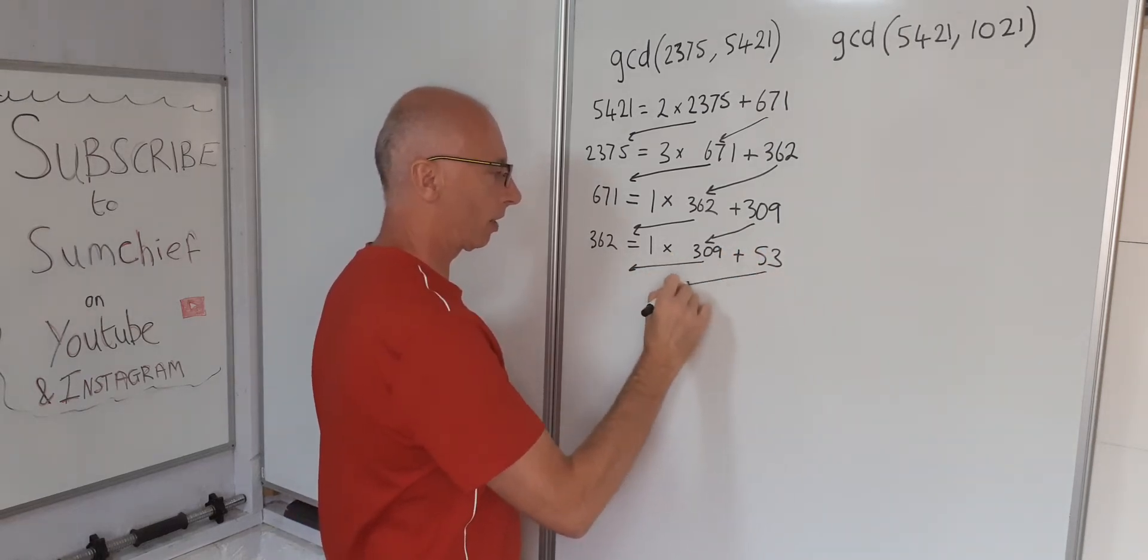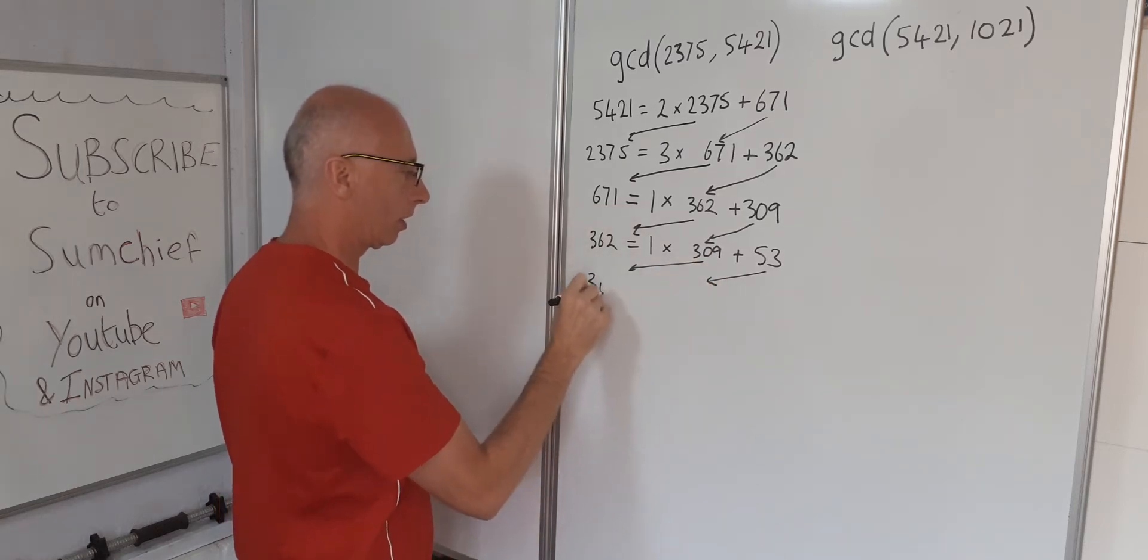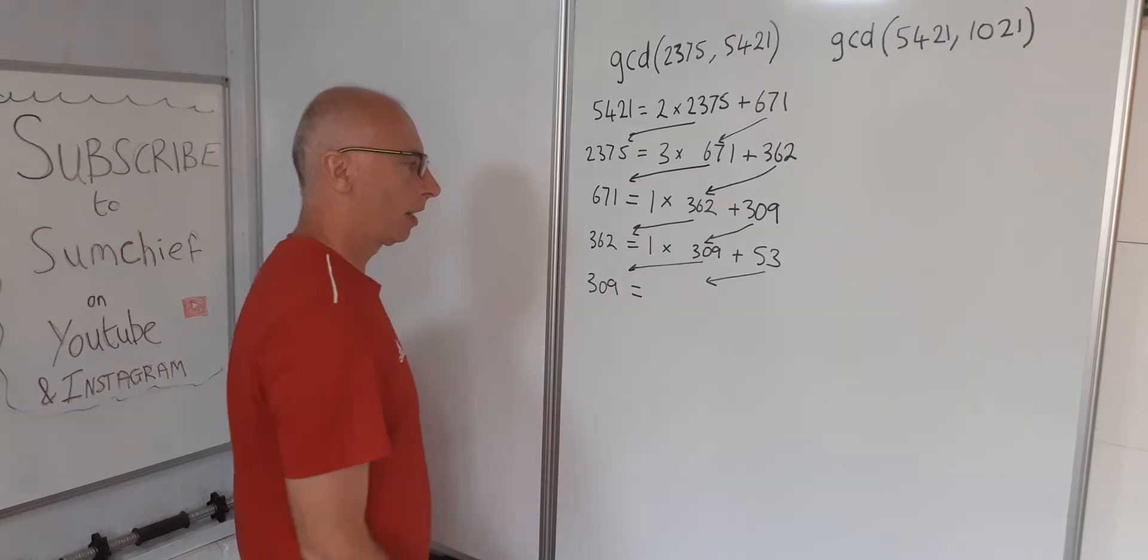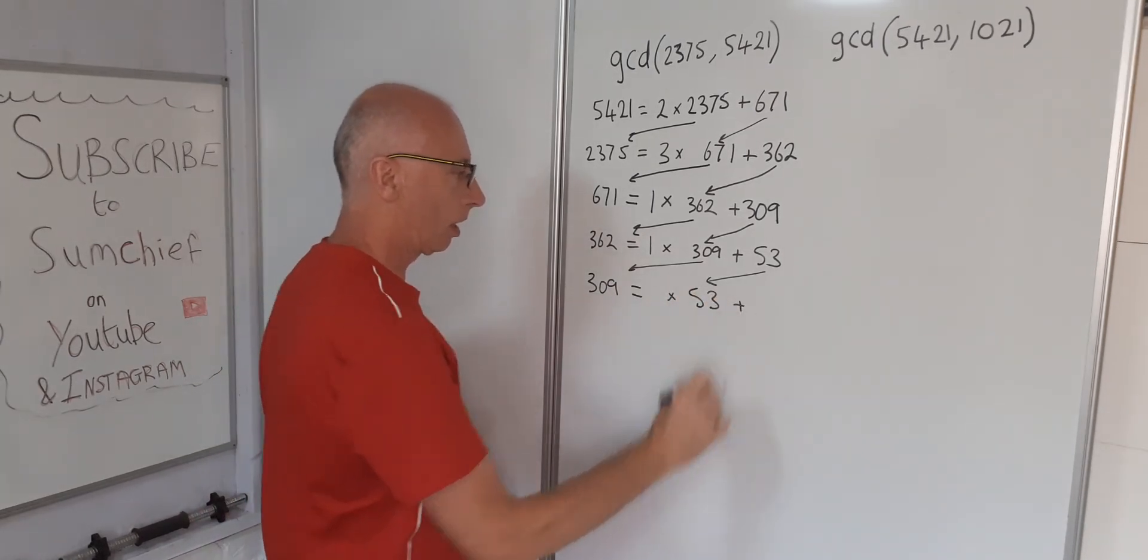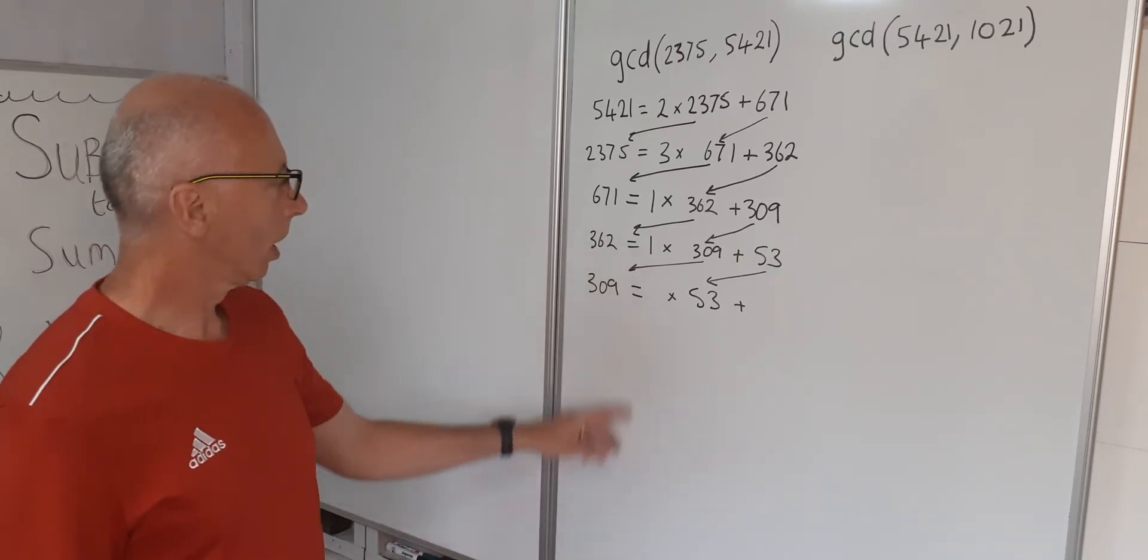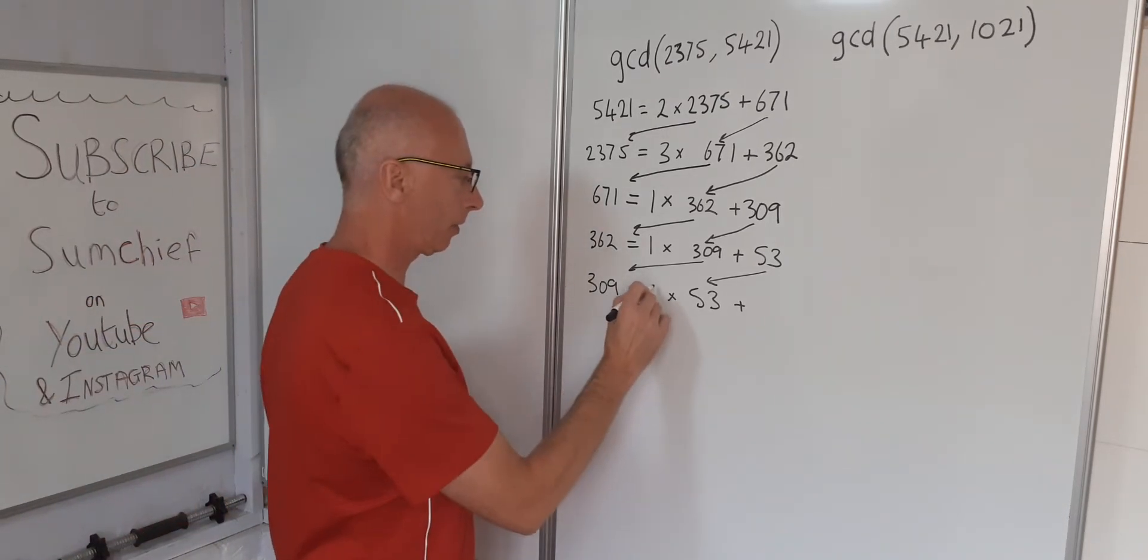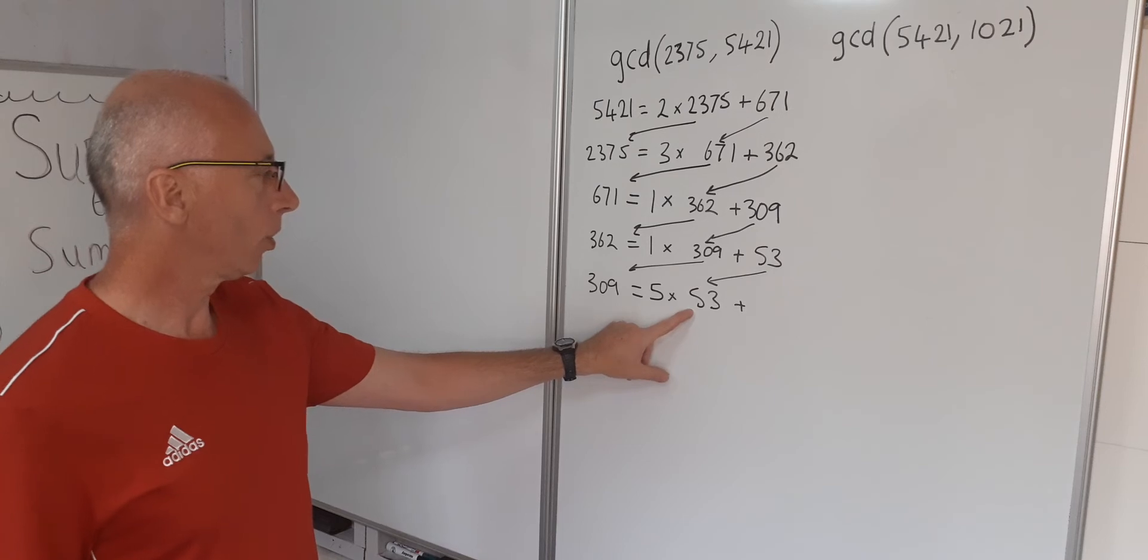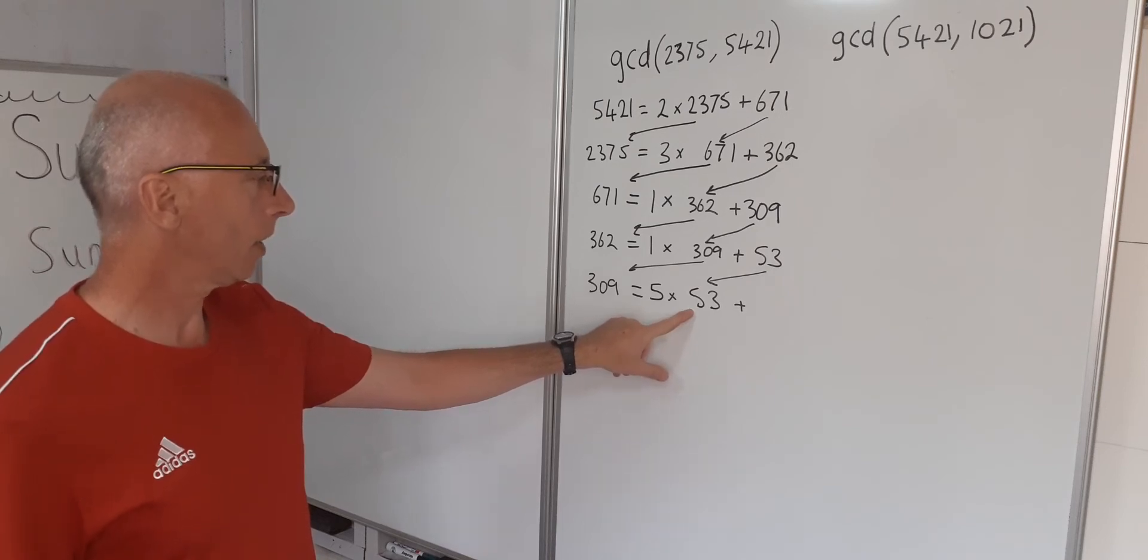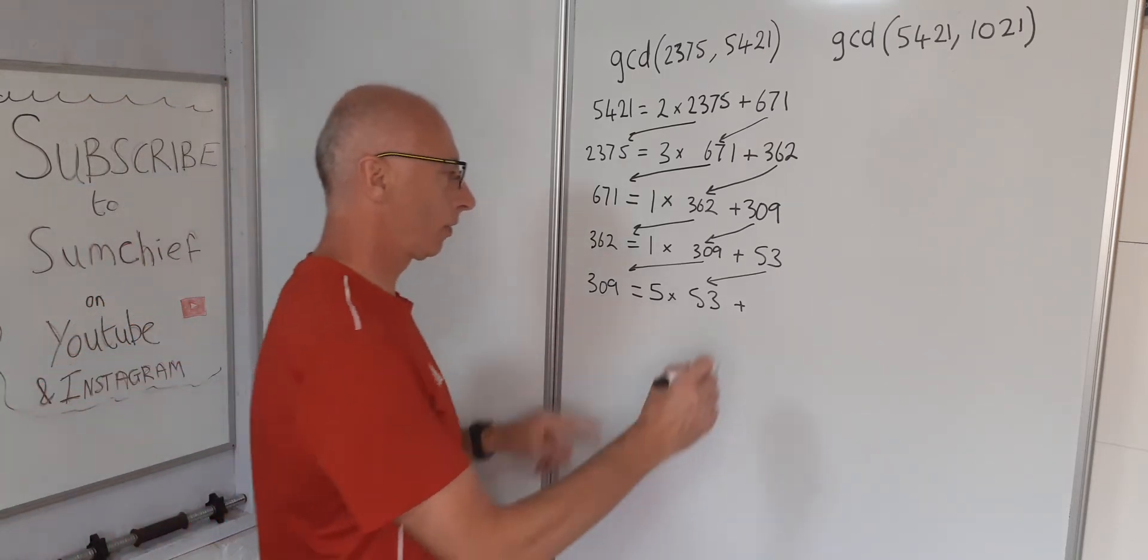Straight into the algorithm. So 309 is the subject again and something times the 53 with a remainder. 53 times 6 would be too many, that would be 315, so it's going to be multiplied by 5. 53 times 5 is 265, take that off 309, that gives us 44.